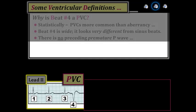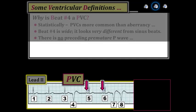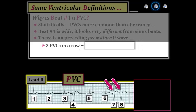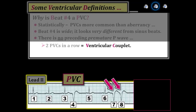Sinus rhythm resumes with beats five and six. We then see two wide beats in a row. Beats seven and eight are PVCs because beat seven is not preceded by any premature P wave, and the QRS morphology of these two wide beats is identical to beat four, which we know to be a PVC. The occurrence of two PVCs in a row is called a ventricular couplet. Clinically, the occurrence of repetitive forms of ventricular ectopy — two or more PVCs in a row — is of much more concern than isolated PVCs, as it increases the risk the patient may develop VT, or ventricular tachycardia.